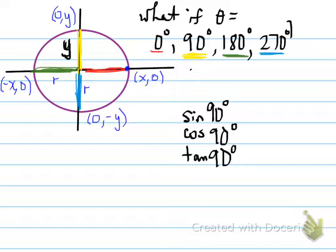So, we take the sine of 90, cosine of 90, and tan of 90, and determine the value. Again, using the same idea of y over r, x over r, and y over x. So, the first one, sine of 90, y over r, is equal to y over y. So, sine of 90 is equal to 1.